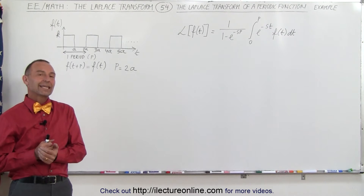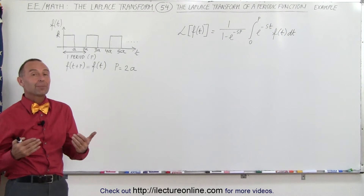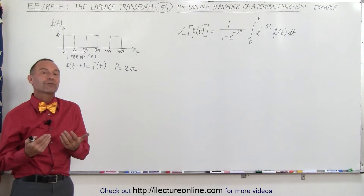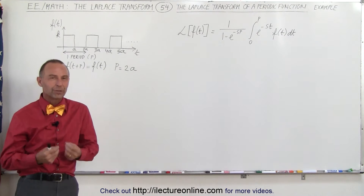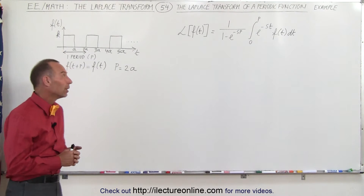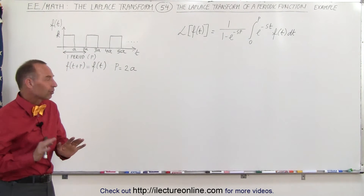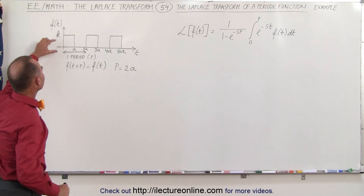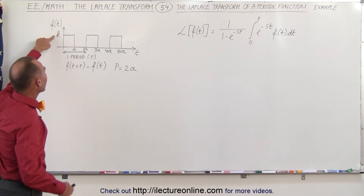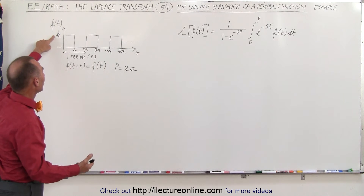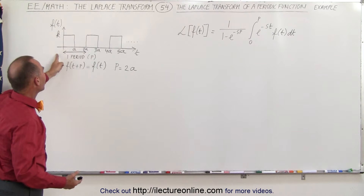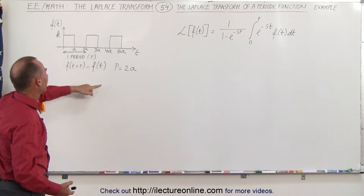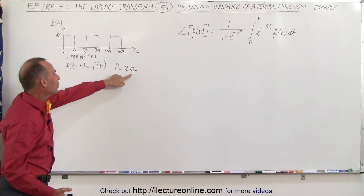Welcome to our lecture online. Here we have an example of how to find the Laplace transform of a periodic function, a real periodic function. We're keeping it somewhat general by saying that the height of impulses is equal to k, some constant, and that the period of the pulse is equal to 2a.